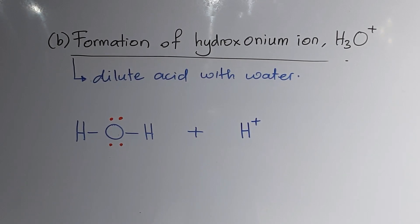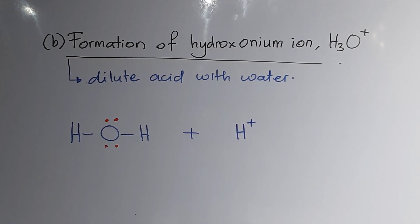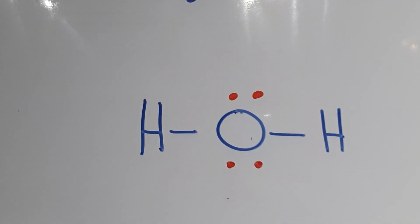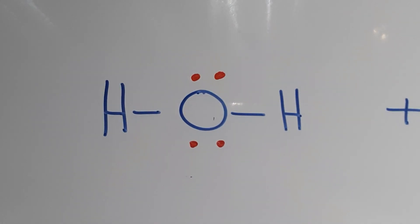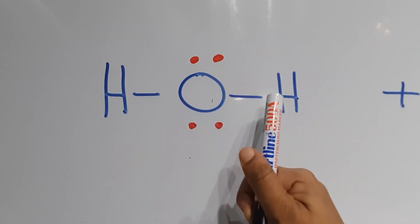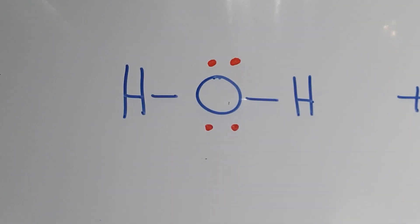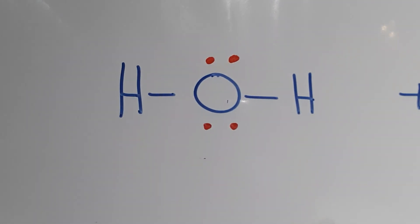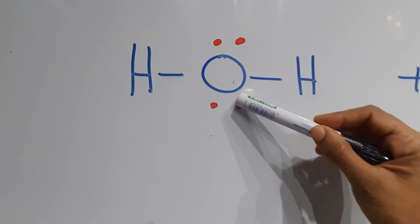The second example of dative bond formation is the hydronium ion. This occurs when you dilute acid with water. Looking closely at the Lewis structure of water: one oxygen atom shares its electrons with two hydrogen atoms, forming two single covalent bonds. In return, there are four valence electrons of the oxygen atom not involved in the covalent bond.